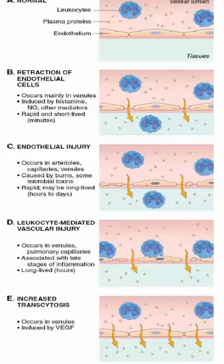Next, we look at the retraction of the endothelial cells. This occurs mainly in venules and is induced by histamine, nitric oxide, and other mediators — it is rapid and short-lived. You can notice that the cells are actually contracting to let the neutrophils out, opening up the space and leaking them out.